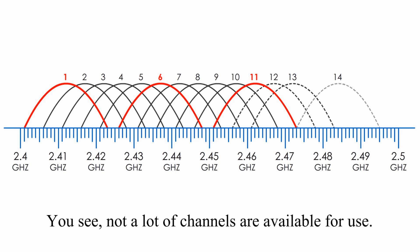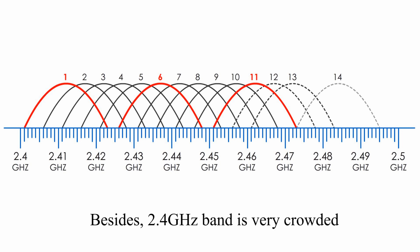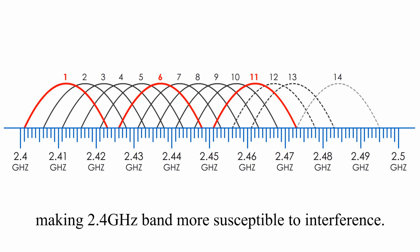You see, not a lot of channels are available for use. Besides, 2.4 GHz band is very crowded because this frequency range is also used for other devices, such as cordless phone, baby monitors, microwave oven, Bluetooth, and so on, making the 2.4 GHz band more susceptible to interference.